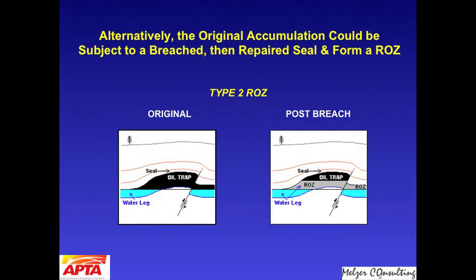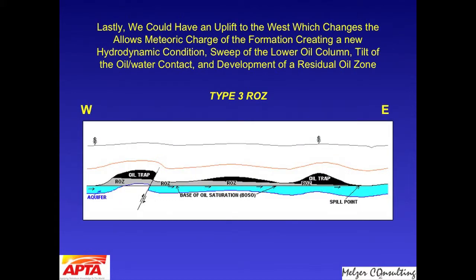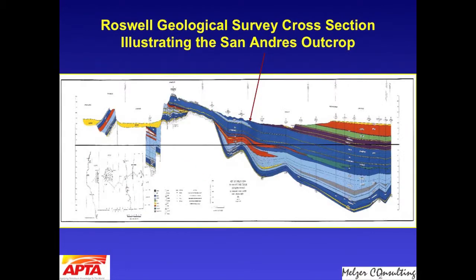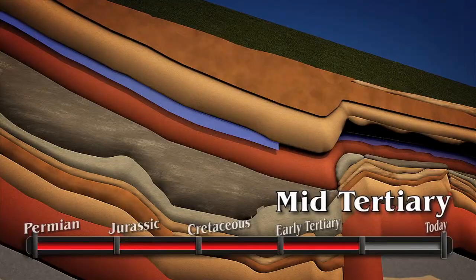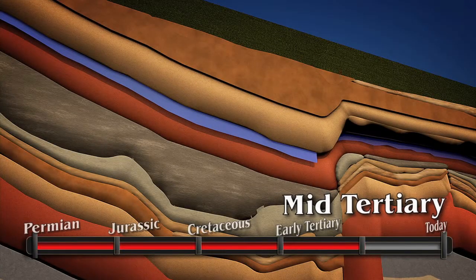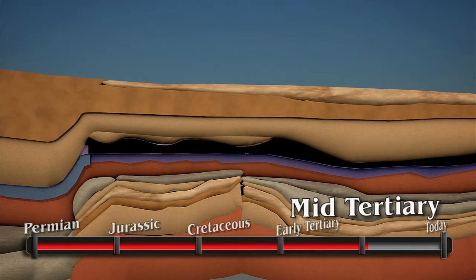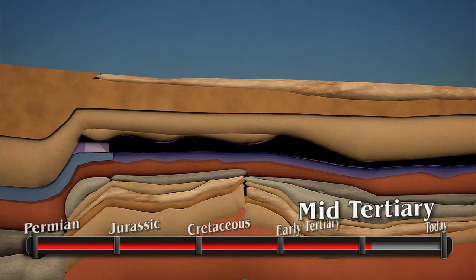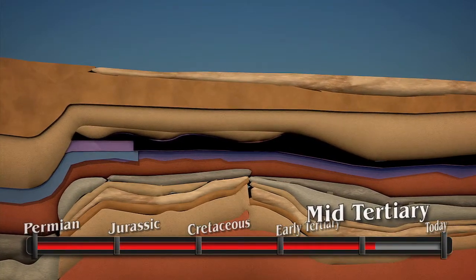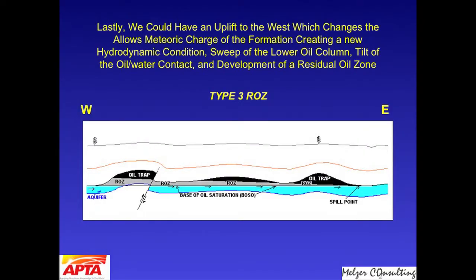We won't cover Type 2 in this particular animation — we'll leave that for a later day. The third type is what we call a Type 3 ROZ, wherein we have a hydrodynamic gradient where water moves, as shown in this slide, from left to right, displacing oil to the right. This leads to a tilted oil-water contact, and this particular type is very common in the Permian Basin.